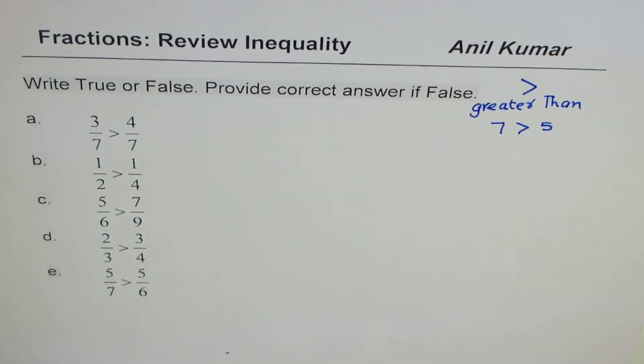Next, 1 over 2 is greater than 1 over 4. 5 over 6 is greater than 7 over 9. 2 over 3 is greater than 3 over 4. 5 over 7 is greater than 5 over 6.